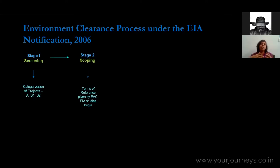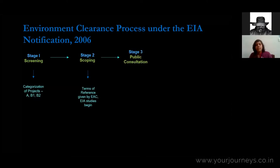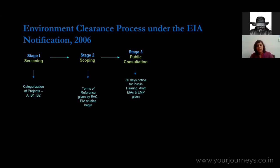During that three-year period, the project proponent engages an external accredited EIA consultant who conducts all the studies as per the Terms of Reference and produces an Environment Impact Assessment report. The third step is the public consultation or public hearing. Once the EIA report is submitted, the project proponent goes to the State Pollution Control Board and issues a notice for the public hearing, which is conducted in every project-affected district.